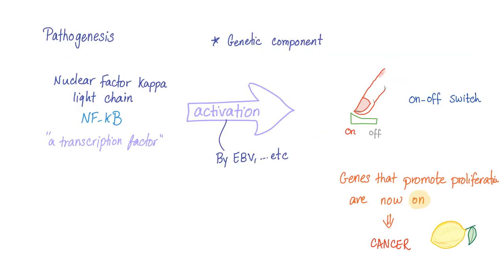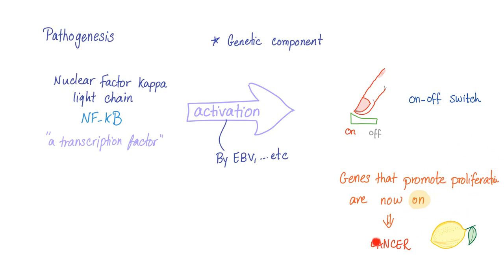Regarding pathogenesis, we have nuclear factor kappa light chain, a transcription factor. EBV will cause activation — turning the switch to on. Genes that promote proliferation are now on, leading to proliferation and ultimately cancer.